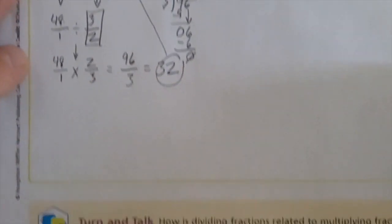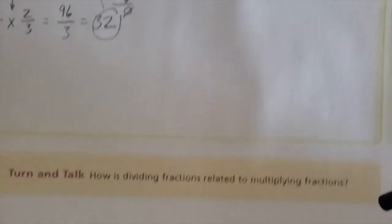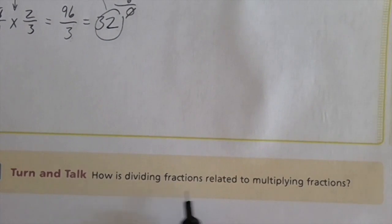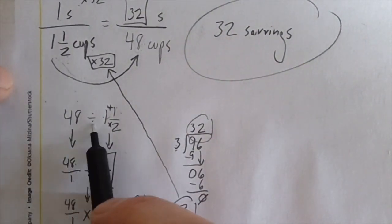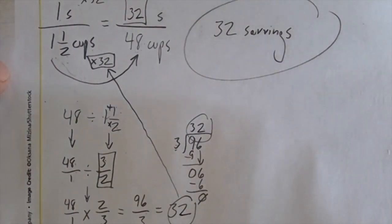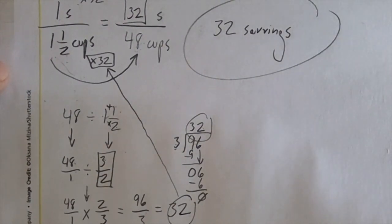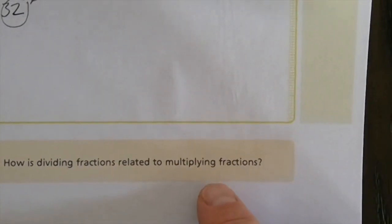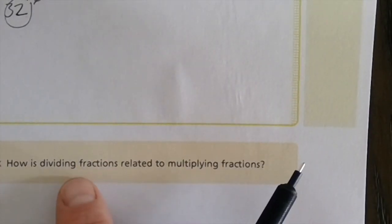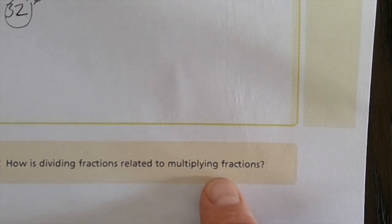At the very bottom of the page, there's a challenge question: how is dividing fractions related to multiplying fractions? We touched on that when we worked out the division problem, 48 divided by one and one-half. Remember — we don't actually divide fractions. We change the division into multiplication. Dividing by a fraction is the same as multiplying by the reciprocal of the fraction.